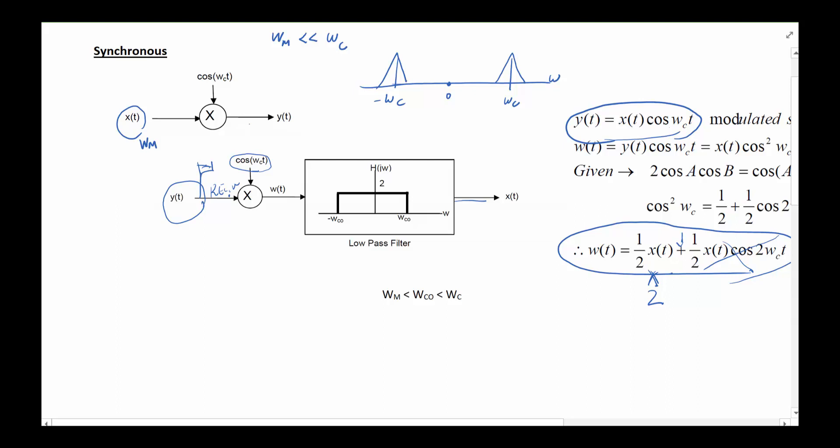So you take your signal, multiply by cosine of omega_c*t, that gets modulated to whatever frequency you want to transmit. On the other side they do exactly the same thing to recover it. The only issue here is that you got to make sure that the receiving end has the same cosine of omega_c*t as you do, starting exactly at the same time. They cannot have a phase difference, otherwise you're not synchronous.